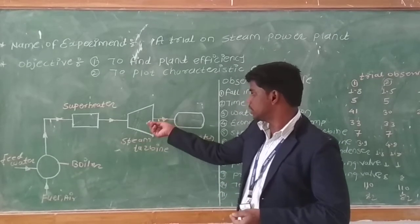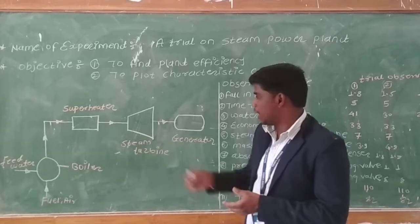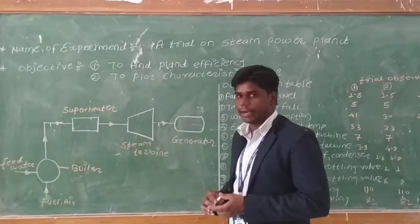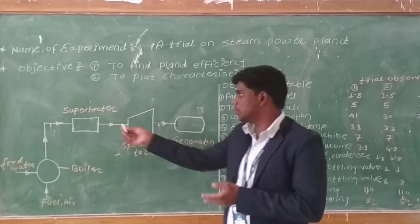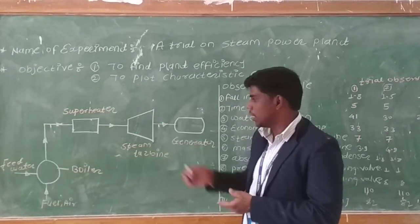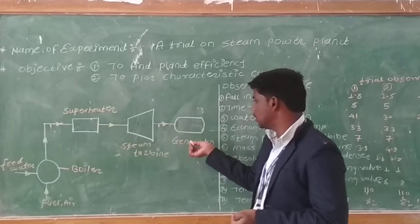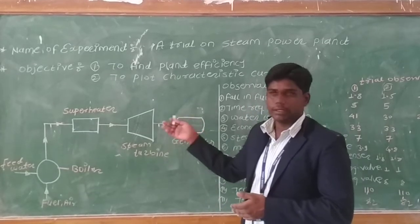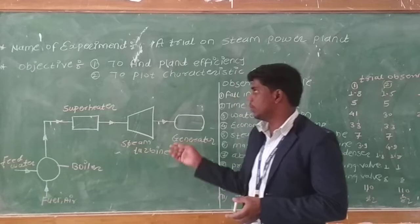The steam turbine rotates and the generator is connected to it. When this superheated steam impacts the steam turbine, the turbine rotates and this shaft is connected to the generator, which produces electricity. This is the working of steam power plant.